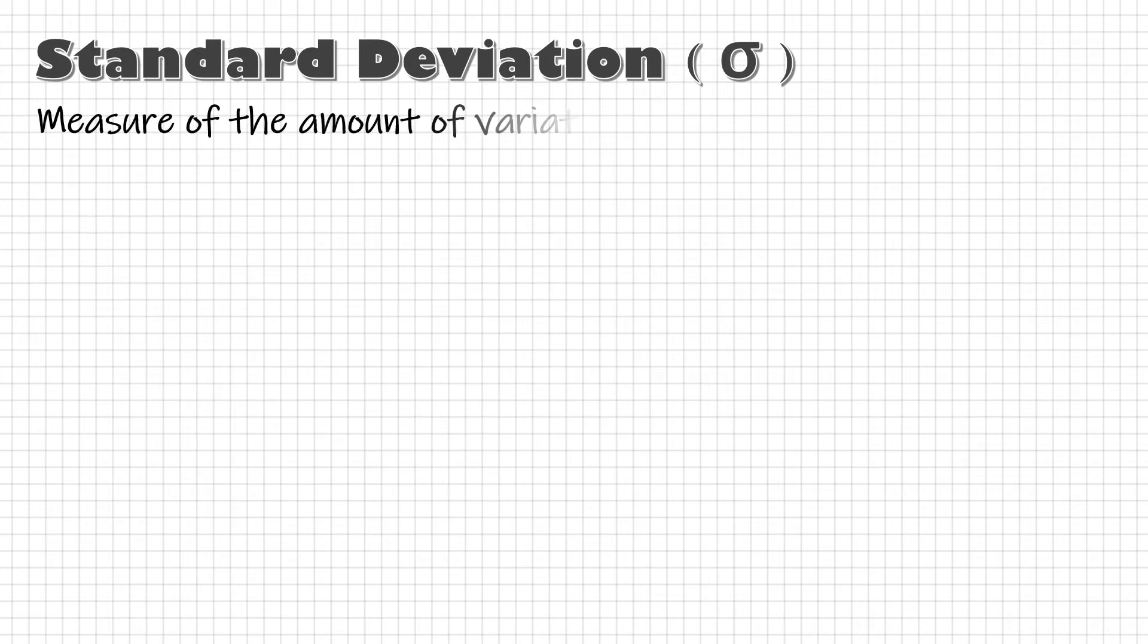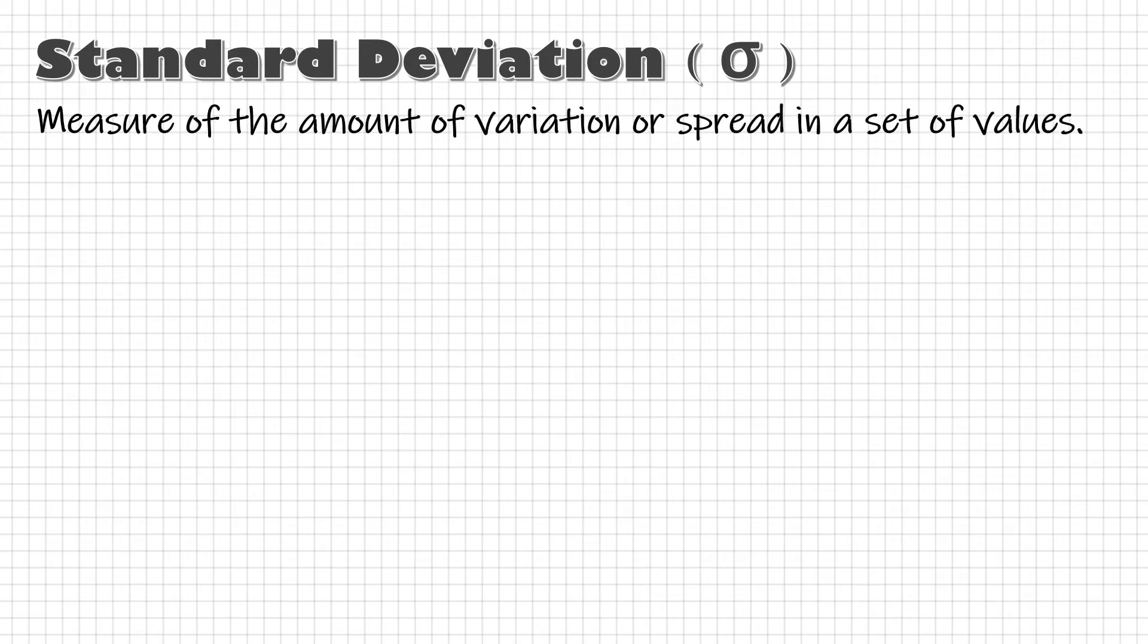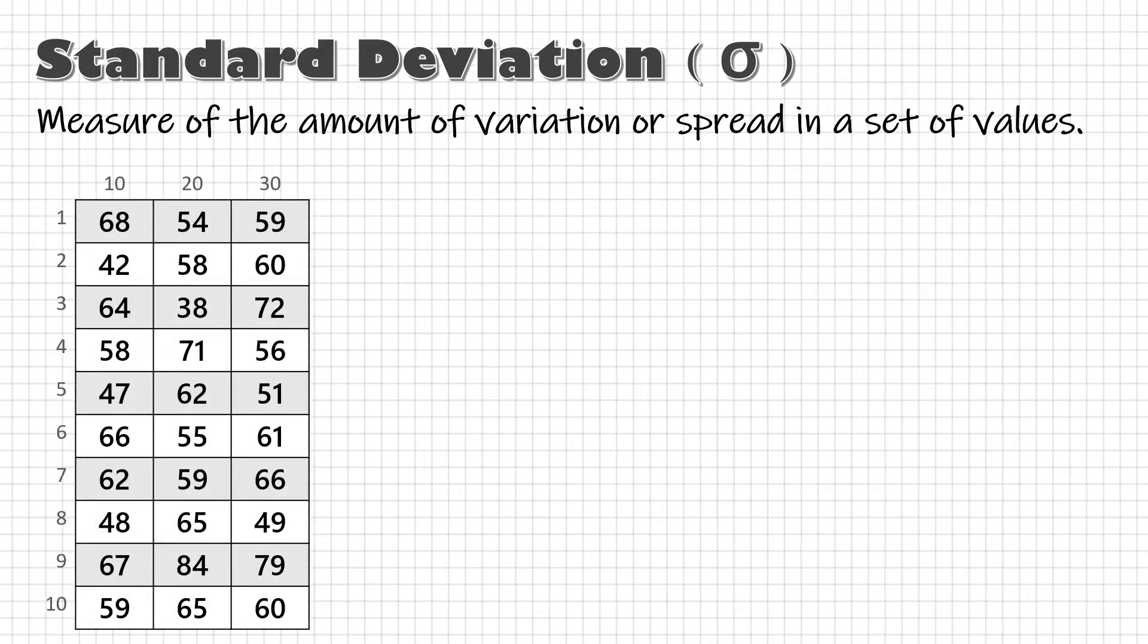Standard deviation is a measure of the amount of variation or spread in a set of values. Suppose this is the actual measurement of 30 parts from a process, then standard deviation can be calculated using this formula. Seems complicated, right? Let me explain.